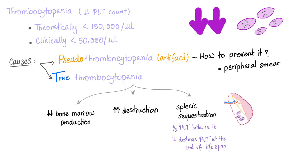In the previous video we talked about thrombocytopenia. It had two types: pseudothrombocytopenia — the fake artifact, because we depend on the analyzer — and the true thrombocytopenia due to underproduction, overdestruction, or splenic sequestration.